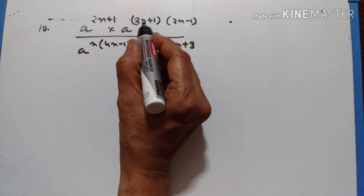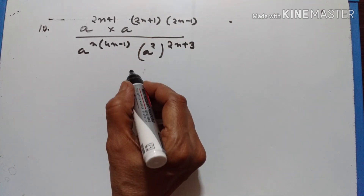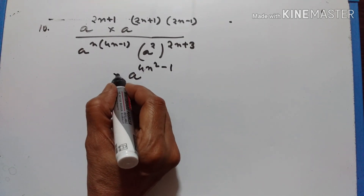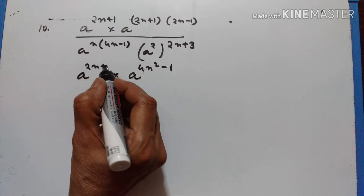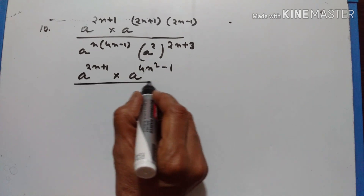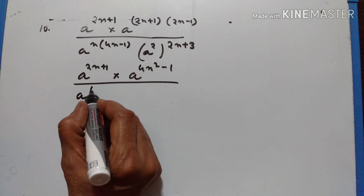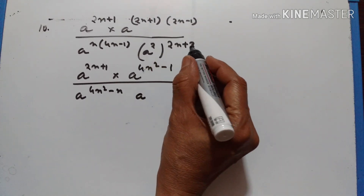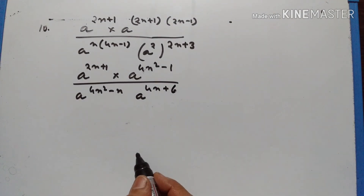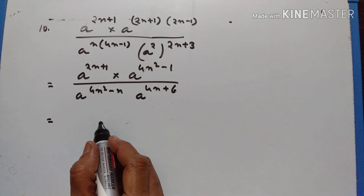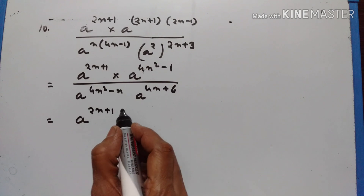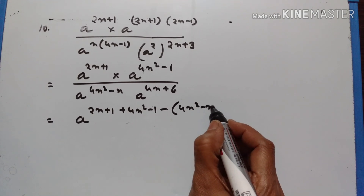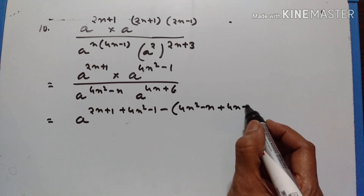2n plus 1 into 2n minus 1: so 2n whole squared minus 1 squared, so a raised to the power of 2n whole squared is equal to 4n squared minus 1. a raised to the power of 2n plus 1, upon a raised to the power of 4n squared minus n, times a into 2 into 2n plus 3 — that is 4n plus 6.